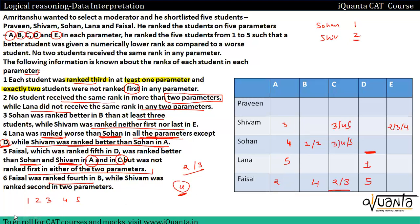Continuing to build our table: checking the possible rank combinations. If Sohan's rank is four, then Lana's rank is five. If Sohan's rank is three, Lana's rank would be four or five. We use these constraints to narrow down valid rank assignments for each cell in the table.